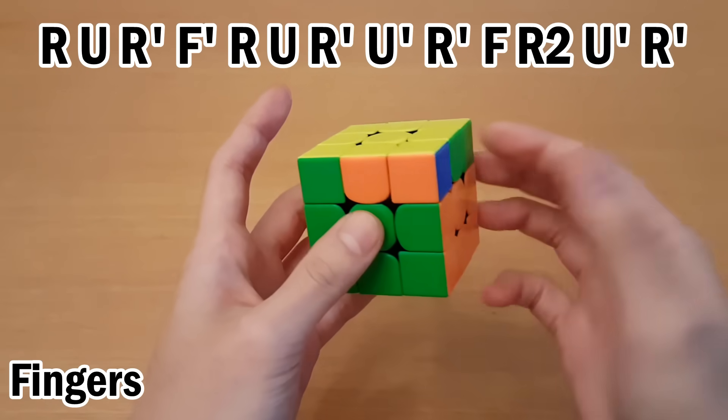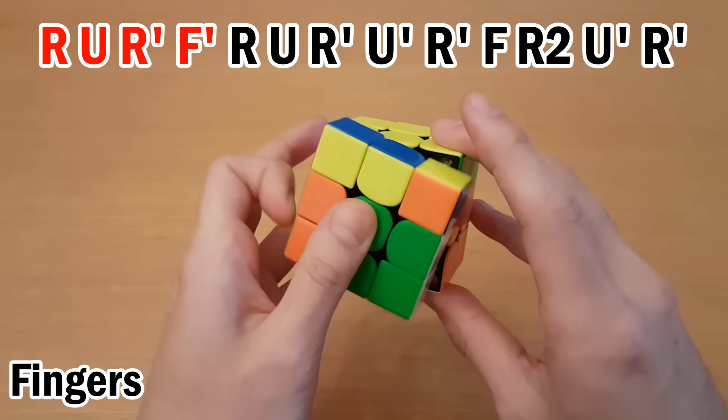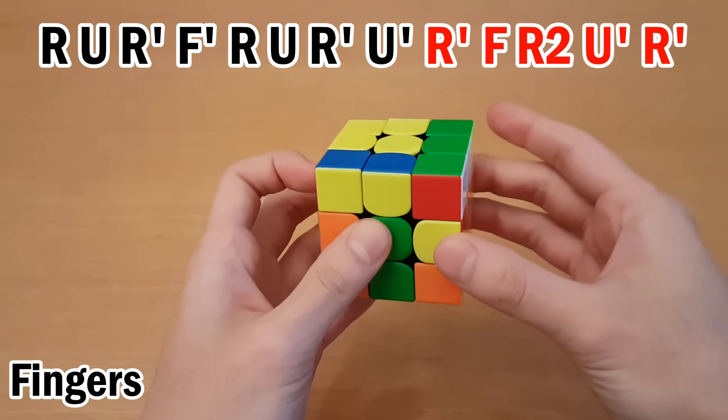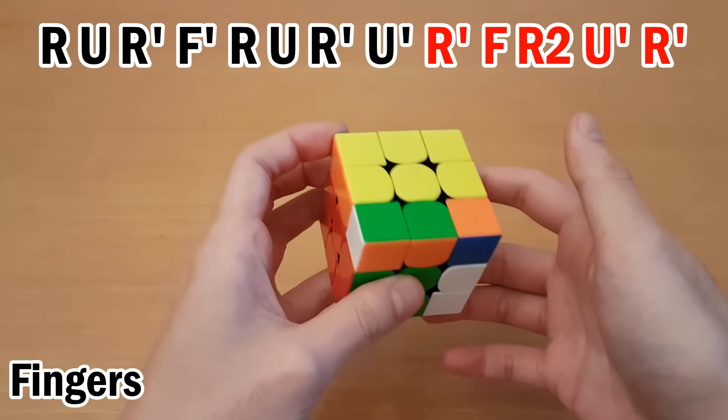So how you can think about it is you're starting with the same four move sequence, except one ends with the left hand doing this, and one ends with the left hand doing this. And you can remember the next part as down right hand, up left hand.